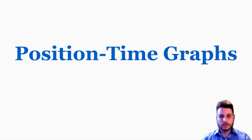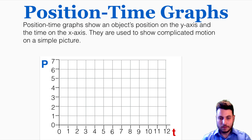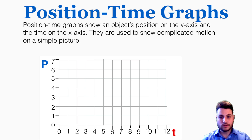This video is about making position time graphs. Position time graphs show an object's position on the y-axis and the time on the x-axis. They're used to show complicated motion on a simple picture.